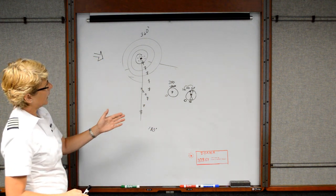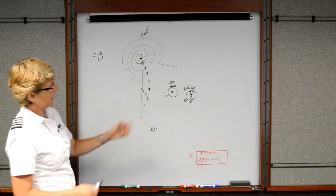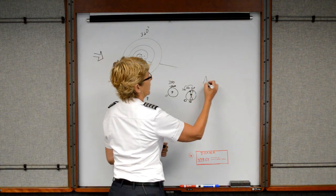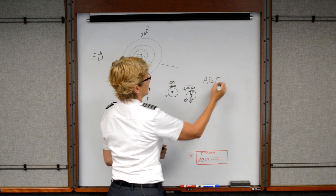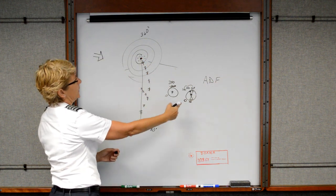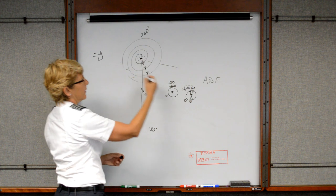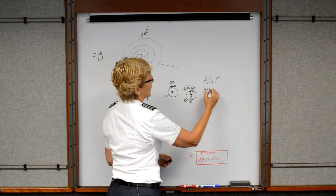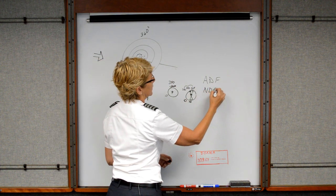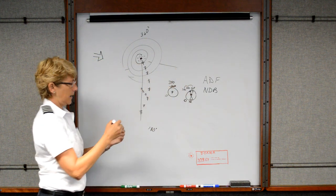So this is basically how your ADF works. ADF, Automatic Direction Finder. It points, the needle just simply points at the NDB, Non-Directional Beacon. And that's a Nav-Aid on the ground.